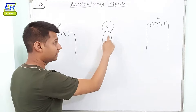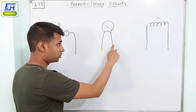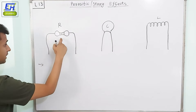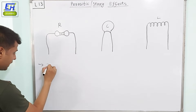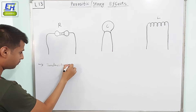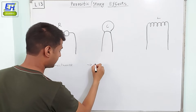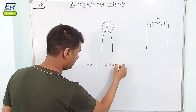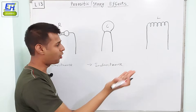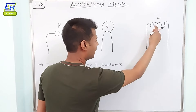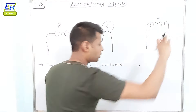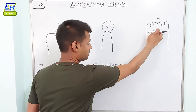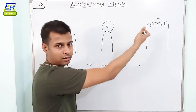So wherever we have leads present, there will be some inductance related to the lead itself. Even in the capacitor, the two leads will possess some inductance. So a resistor will possess some inductance. Same is the case with the capacitor — it will also have some inductance. An inductor by itself already has its own inductance; this lead inductance will also add up, but its value will be very less compared to the inductor's own inductance. So the inductor already has inductance.